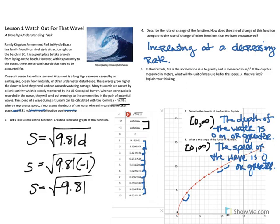The next question is where we're going to talk about the units for the speed. So it says in the formula, 9.8 is the acceleration due to gravity and it's measured in meters per second squared. If the depth is measured in meters, what will the unit of measure be for speed?